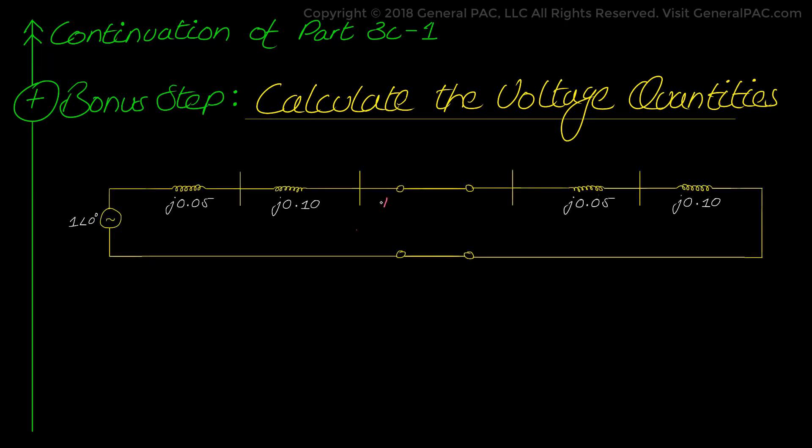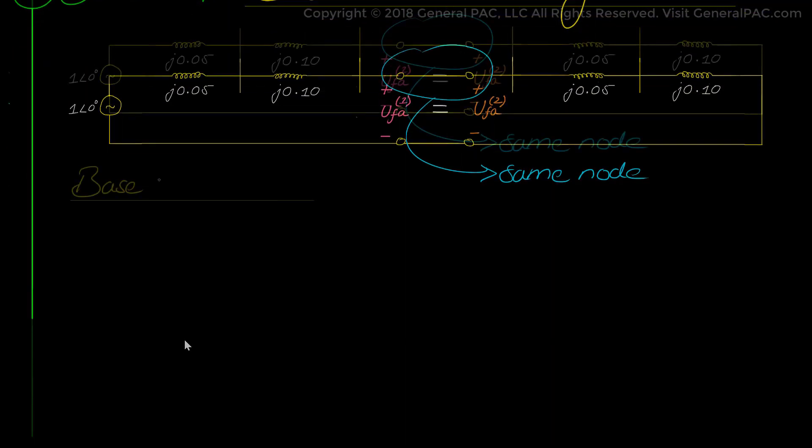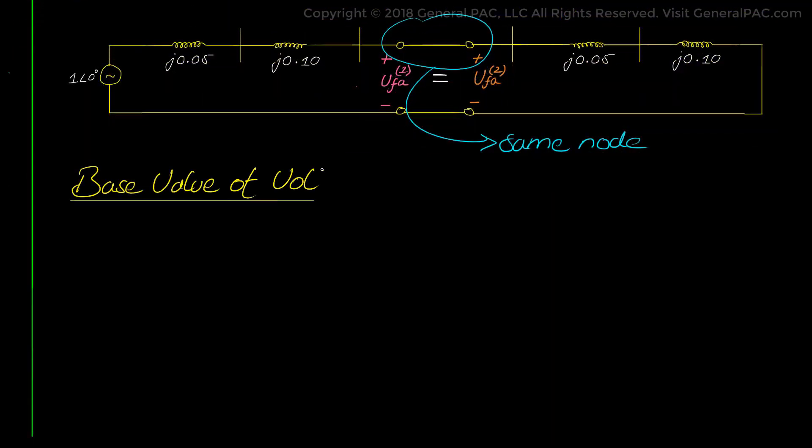We see that from the fault sequence network, the positive and negative sequence voltages at the point of the fault will be equal to each other, because we are measuring at the same node. So positive sequence voltage and negative sequence voltage will be equal, as shown in the sequence network diagram. We use the same base value as before, where VBase equals 13.8 kV divided by √3.